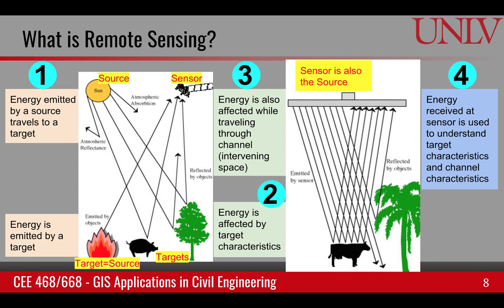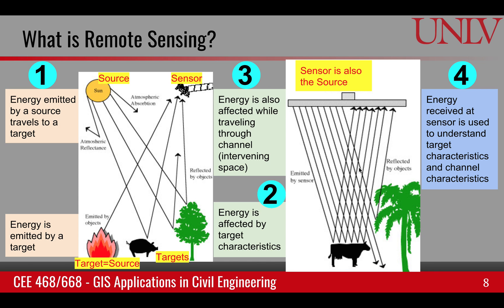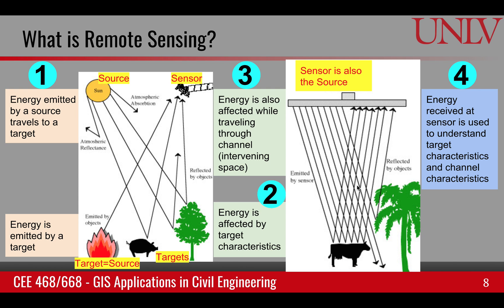Remote sensing can be thought of as follows: there's an energy source, energy travels to the target, or the target has its own energy and emits it. In both cases, energy carries information about the target and travels toward the sensor. If there is intervening space between the target and the sensor, that space also affects the traveling energy. Once the energy reaches the sensor, it can be processed to retrieve information about the target.